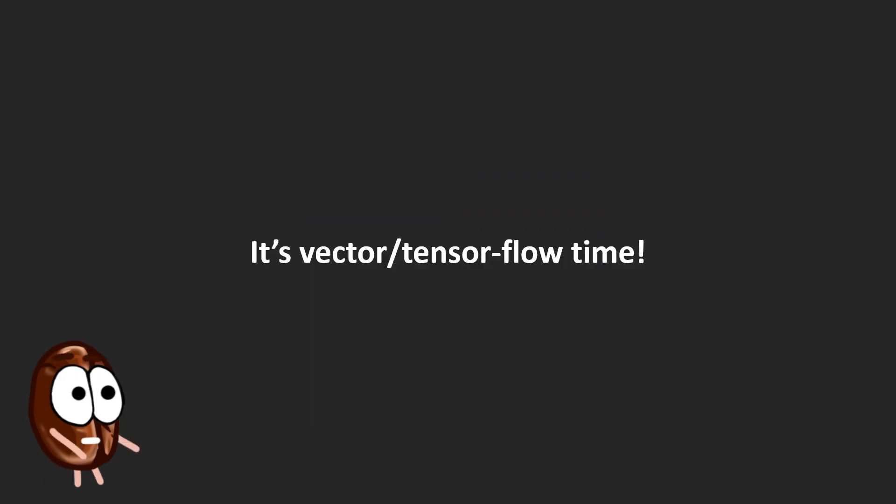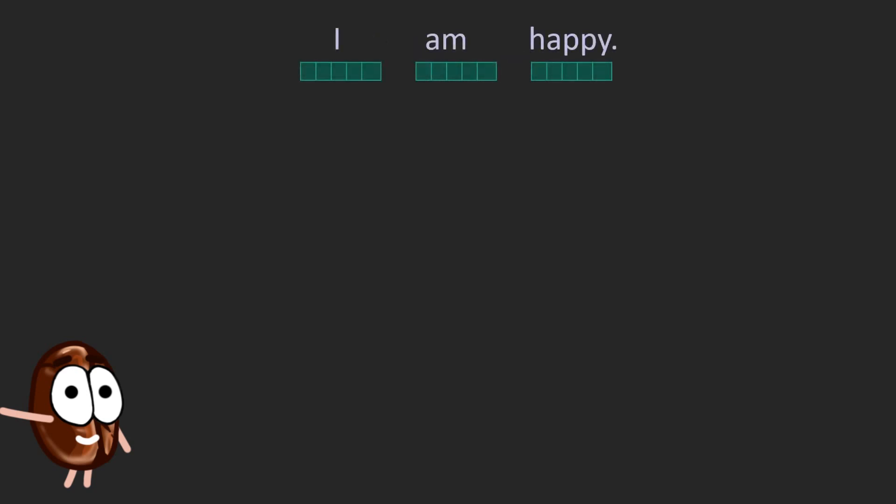Now for explaining what these layers do exactly, it is vector TensorFlow time. We say vectors because, of course, our network does not look at the text itself, but rather at a vector representation of this text. These vectors are pre-computed with a word embedding method of our choice. And these vectors go into the self-attention layer.